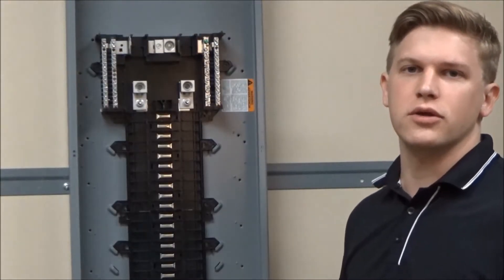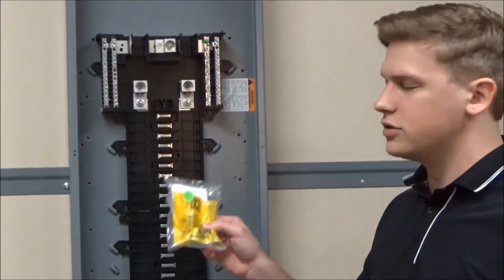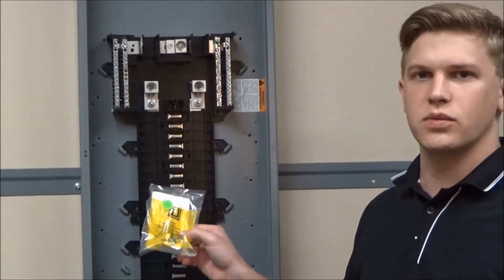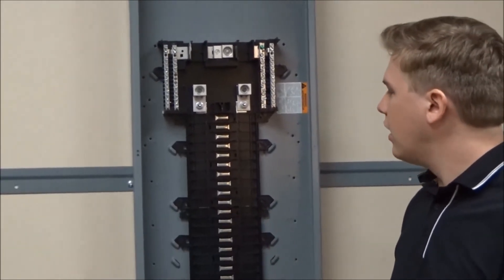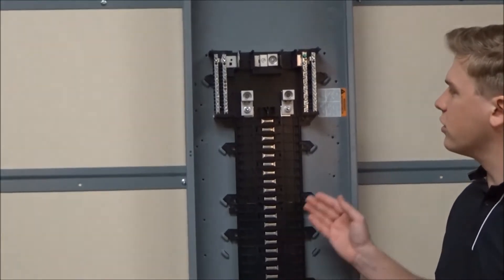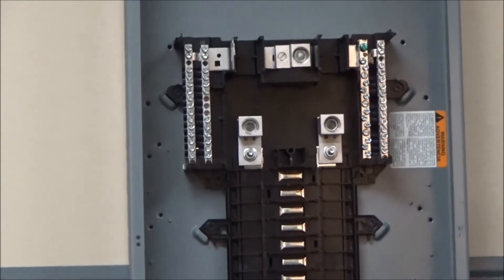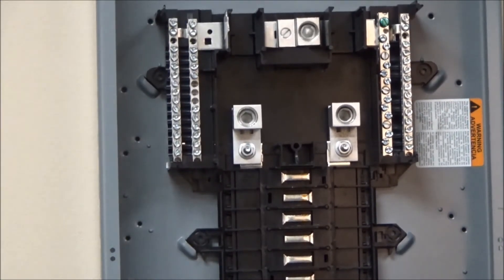In this video we'll be showing you how to install the LK-225-AN neutral lug into a Square D load center. In this video we are using a QO load center, however it can be installed in any QO or Homeline load center besides the Homeline plug-on neutral load centers.